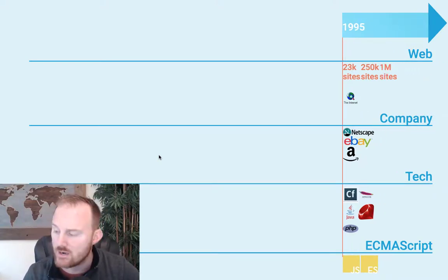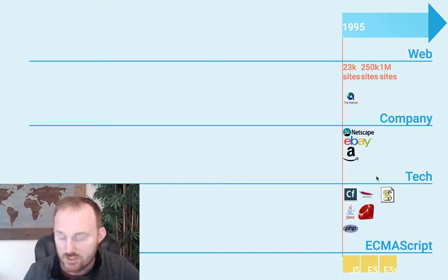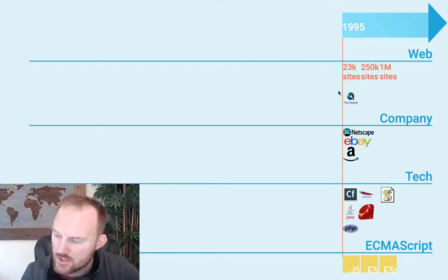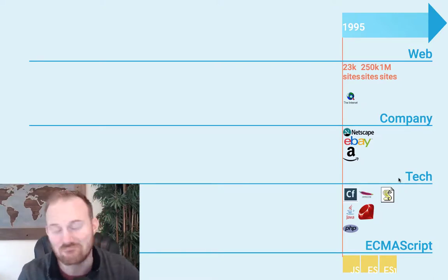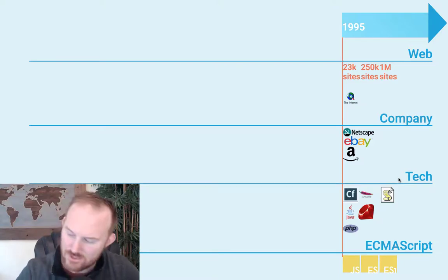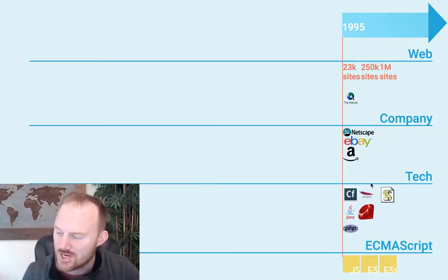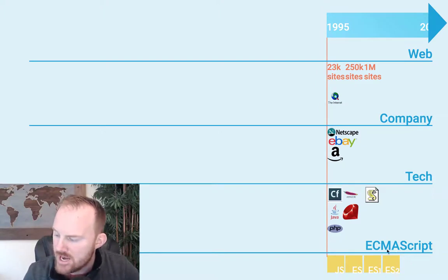In 1997, we hit a million websites. ES1 is finally standardized. JScript is Internet Explorer's JavaScript engine — SpiderMonkey is what the engine in Netscape Navigator was called. Microsoft can't call it JavaScript, so they call it JScript. JScript is not all that clever, but it's pretty much the same thing as JavaScript and is based on the ES1 standard. This is a really big breakthrough — it's missing some stuff, but it runs much cleaner and better in the browser.